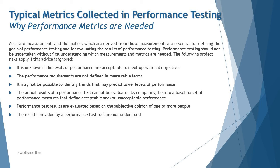Risk five: performance test results are evaluated based on the objective or subjective opinion of one or more people. It's not enough for one person to execute a scenario and rely solely on that outcome. The same scenario can be executed by different people in different environments at different times to check for issues related to geographical distribution, different regions of the world, or specific times of day.